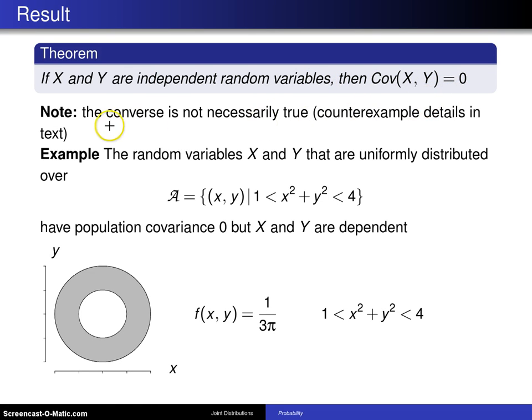Some people think that the converse of this is true. That is, if we have a covariance of 0, then we have to have independent variables. It turns out that's not the case.